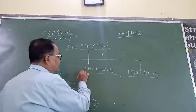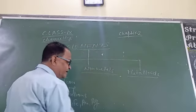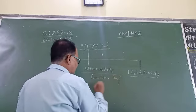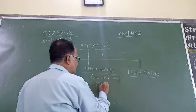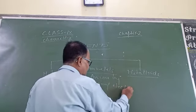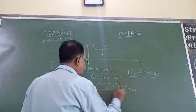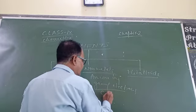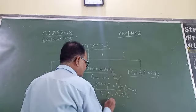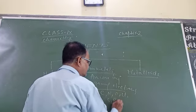The elements having tendency to make anions by gaining electrons are called non-metals. Examples include carbon, nitrogen, oxygen, chlorine, sulfur, phosphorus, and so on.